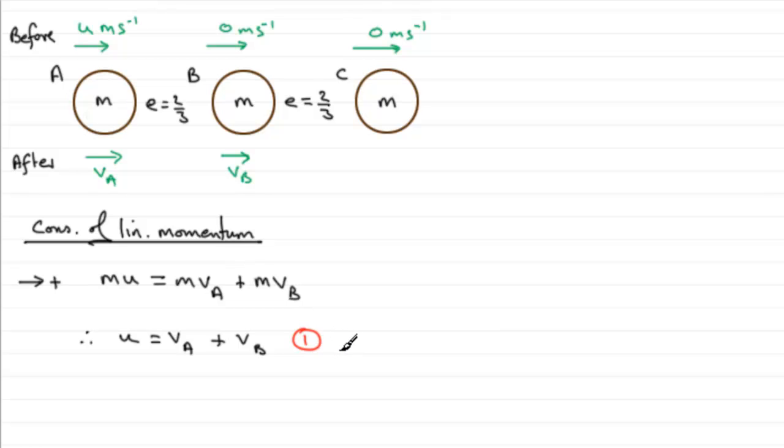Now each term's got an m in, so I could divide through by m and I end up with u equals va plus vb. So there's one of the two simultaneous equations. We'll just call that number one.